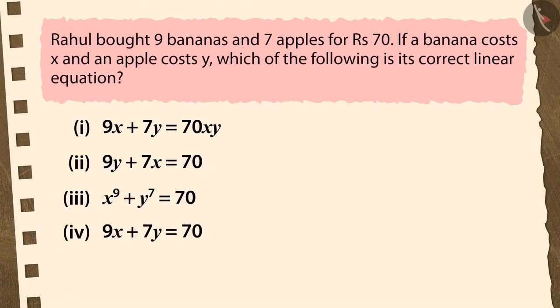Rahul bought 9 bananas and 7 apples for Rs. 70. If a banana costs X and an apple costs Y, which of the following is its correct linear equation?